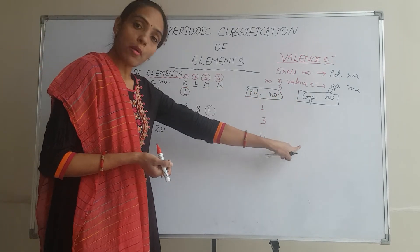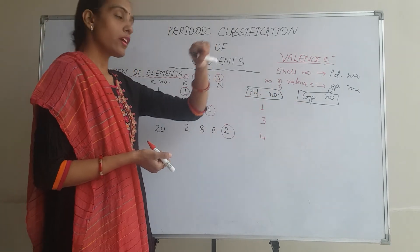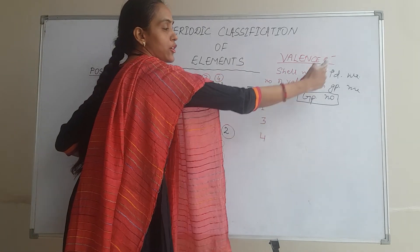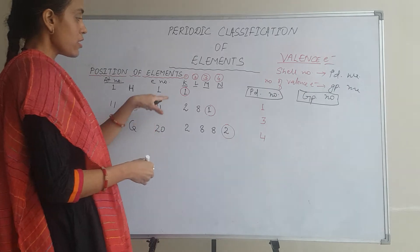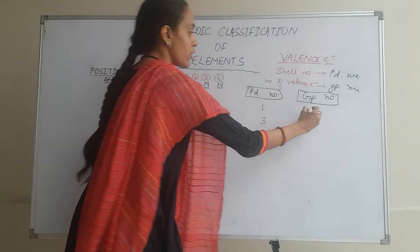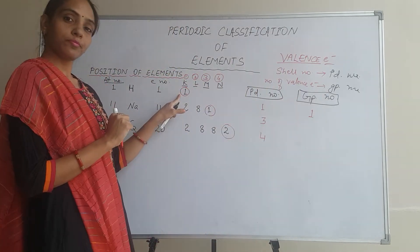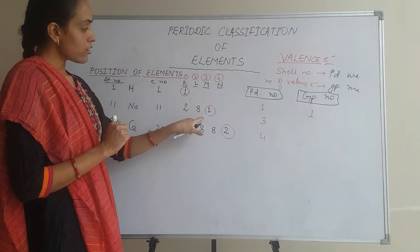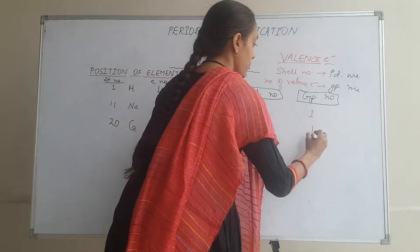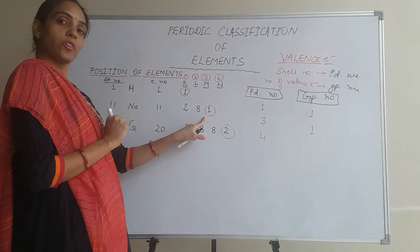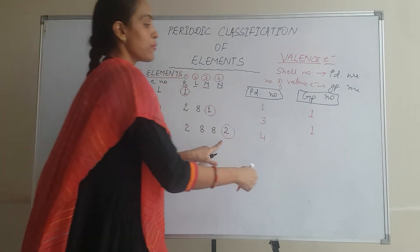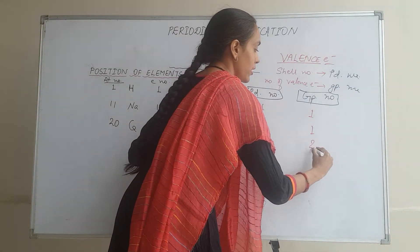Let us check the group number now. The number of valence electrons tells us the group number. For Hydrogen: how many valence electrons? 1. So group number will also be 1. For Sodium: again 1 valence electron, so group number is 1. For Calcium: 2 valence electrons, so group number will be 2.